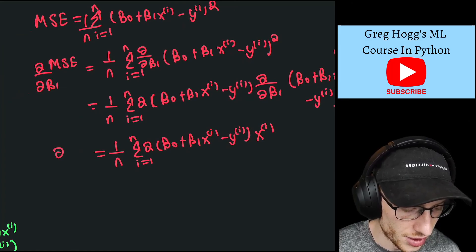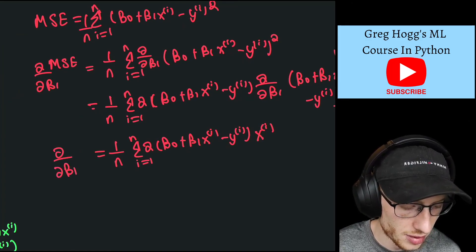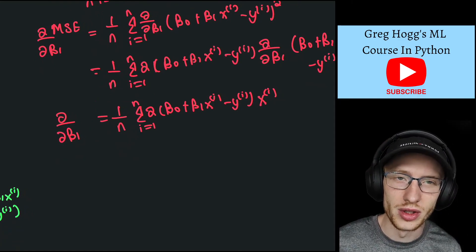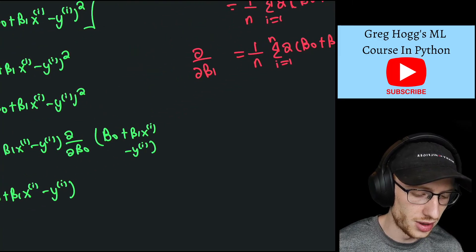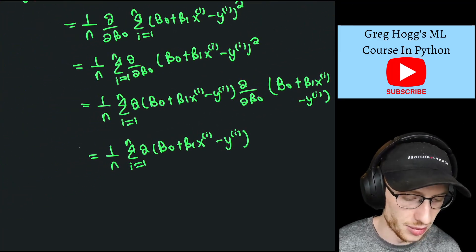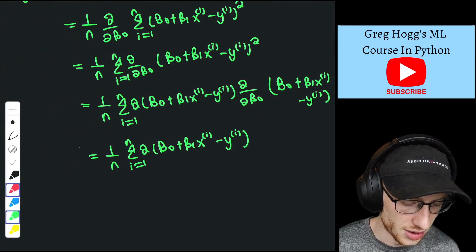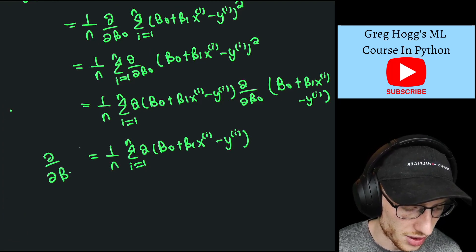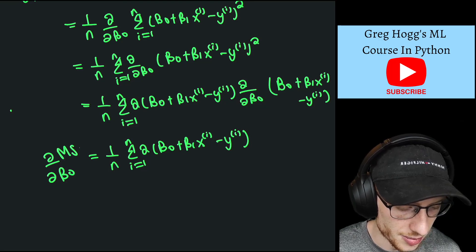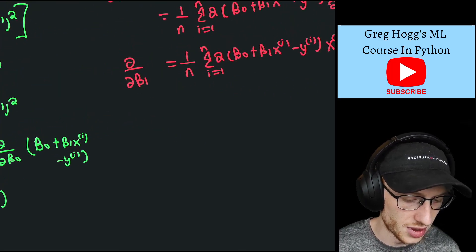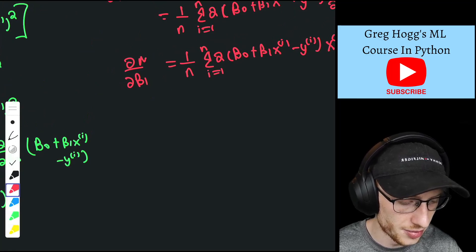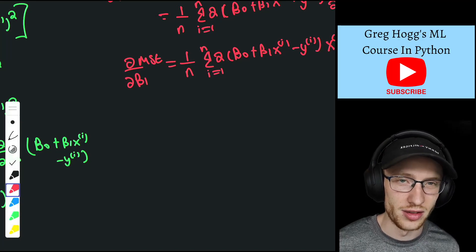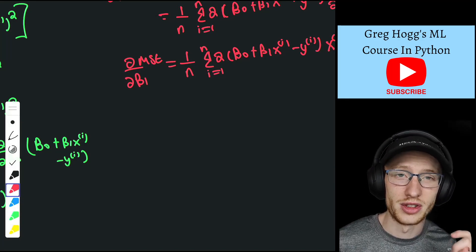So these are the two derivatives. The partial by partial β₁ of the MSE, and — let me write in green — the partial by partial β₀ of the MSE. Those are our two derivatives. In the next video, we are going to solve this system by setting them equal to 0 and get a formula for β₀ and β₁. I will see you in the next video.